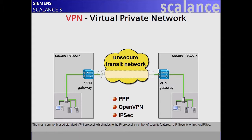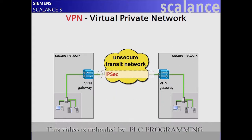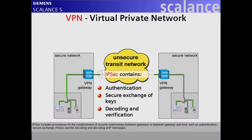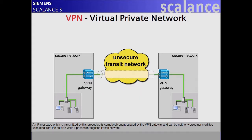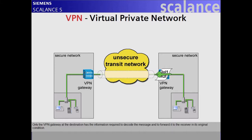The most commonly used standard VPN protocol, which adds to the IP protocol a number of security features, is IP security, or in short, IPsec. IPsec includes procedures for the establishment of security relationships between gateways or between gateway and host, such as authentication, secure exchange of keys, and the encoding and decoding of IP messages. An IP message transmitted by this procedure is completely encapsulated by the VPN gateway, and can be neither viewed nor modified unnoticed from the outside while it passes through the transit network. Only the VPN gateway at the destination has the information required to decode the message and forward it to the receiver in its original condition.